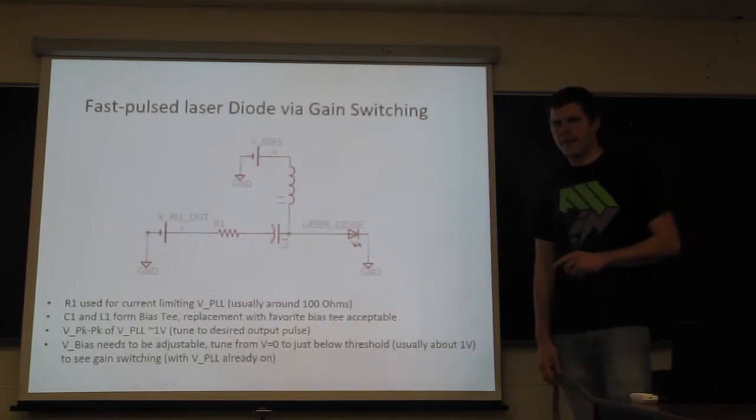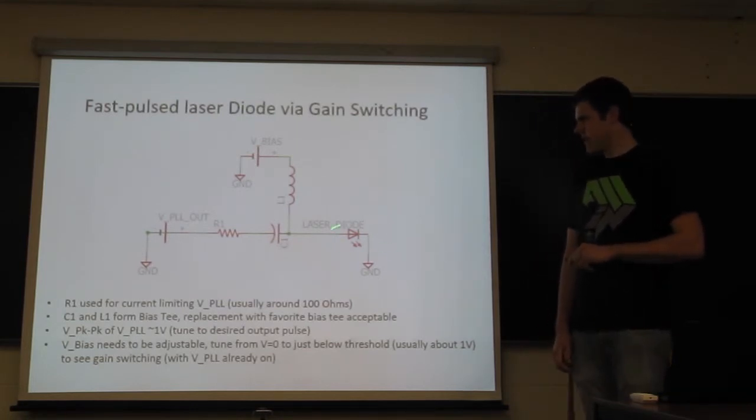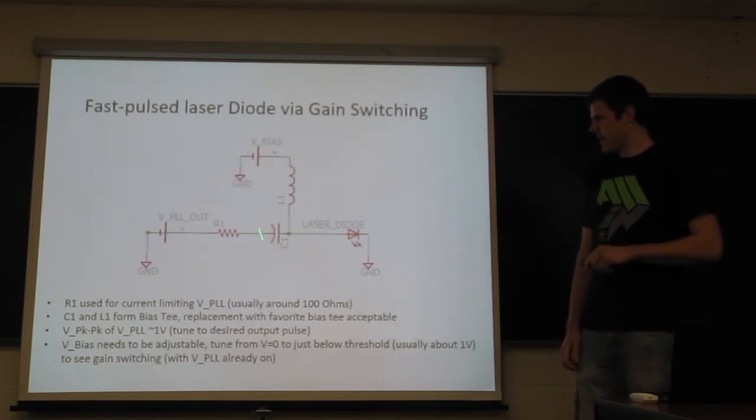Here's a simple schematic for a circuit to gain-switch a laser. You have your laser diode here, and you have a bias T here, and this allows you to put an RF signal in and a DC bias in.